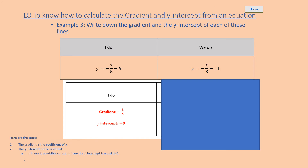Let's have a go at another one — we want the gradient and the y-intercept. So y equals minus x over five minus nine. That's like saying minus one x over five, so that's going to be minus a fifth, because there's always an invisible one in front of the x. So the gradient is minus one-fifth, and the y-intercept — the constant — is negative nine.